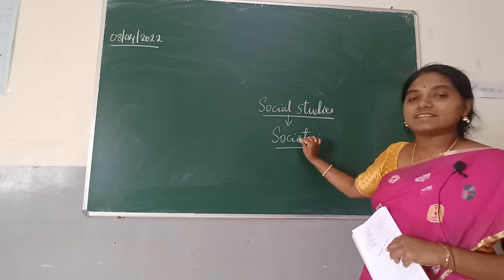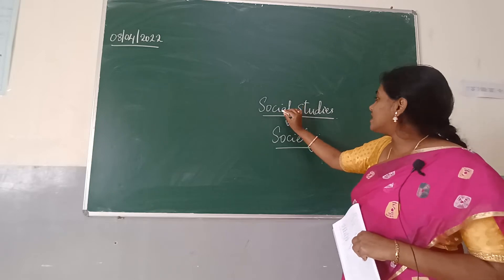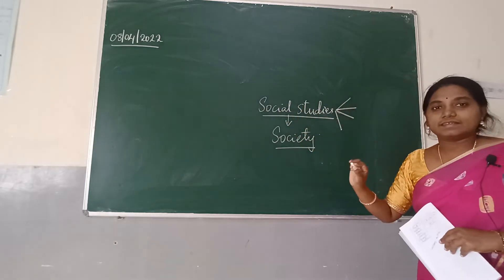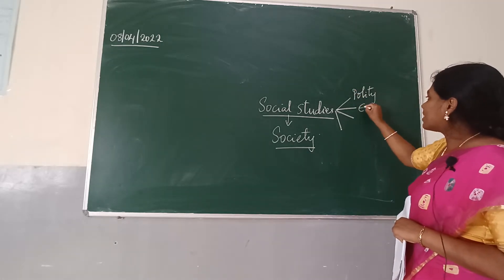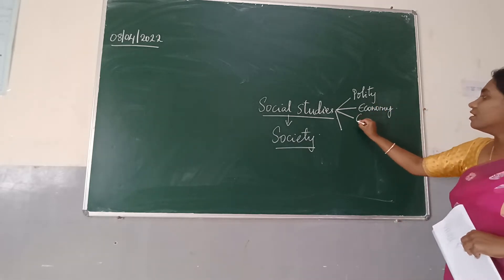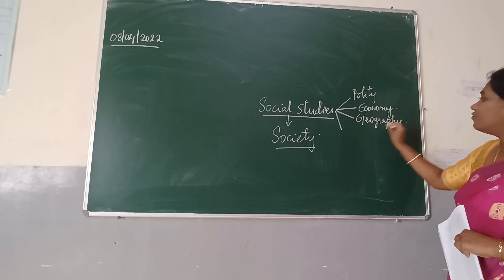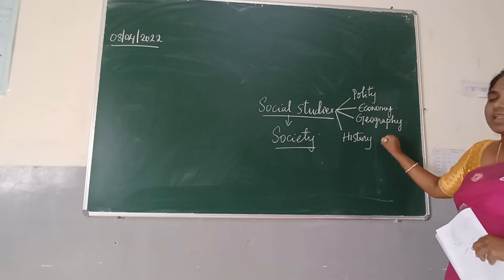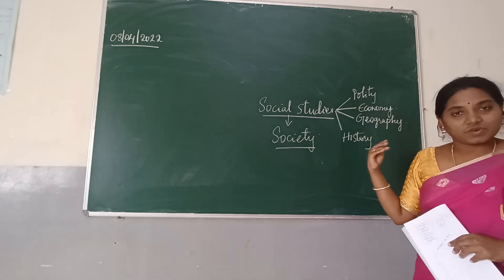Study of society is called social studies. Social studies is broadly divided into four parts: the first is polity, the second is civics, the third is geography, and the fourth part is history. Let us quickly get an idea of what polity, economy, geography, and history are.